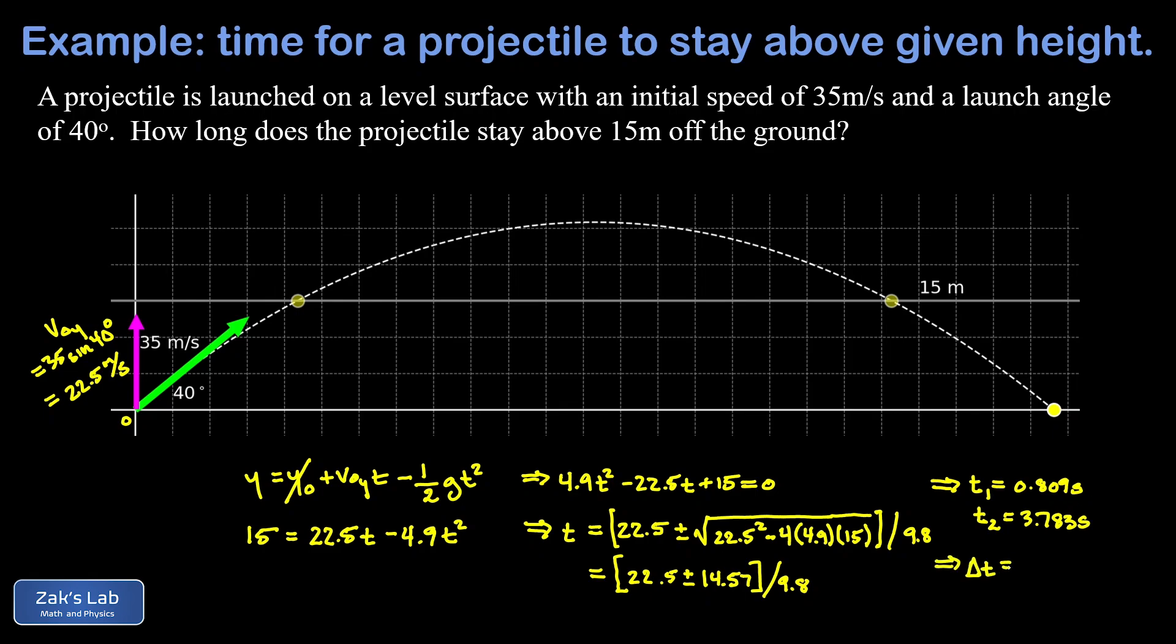Finally, we're going to take the difference in these two times. So we'll call that Delta T. So we take 3.783 minus 0.809. And to our usual three significant digits, we arrive at a time of 2.97 seconds. And we've got the amount of time this projectile spends above the 15 meter mark above the ground.